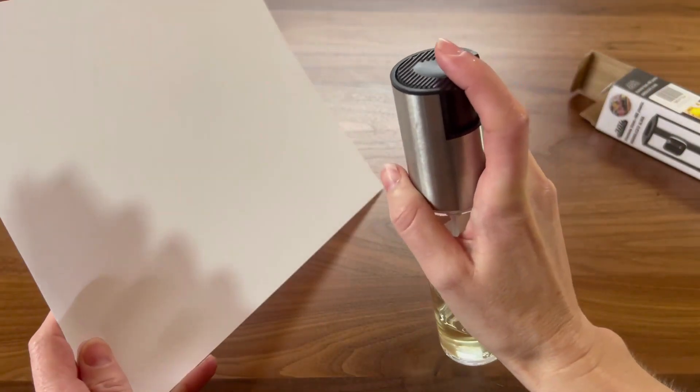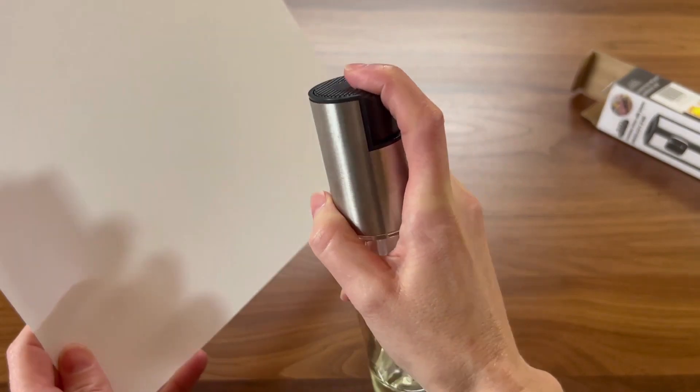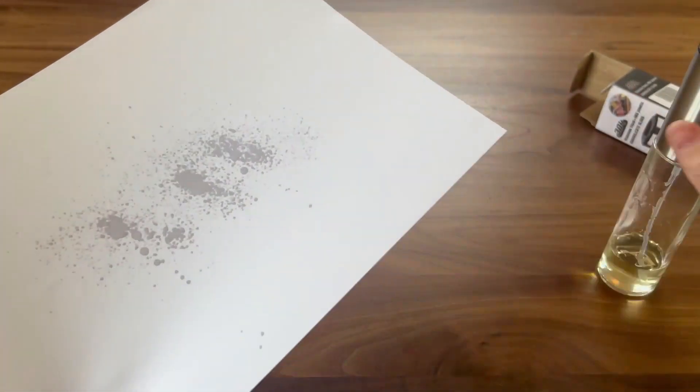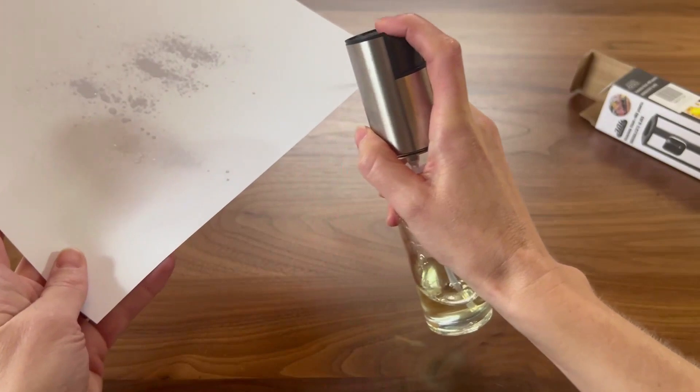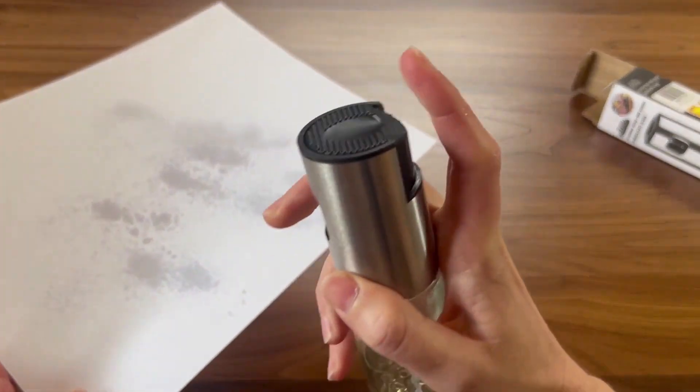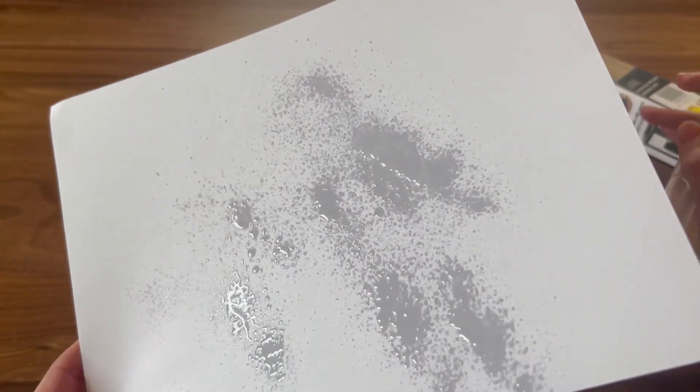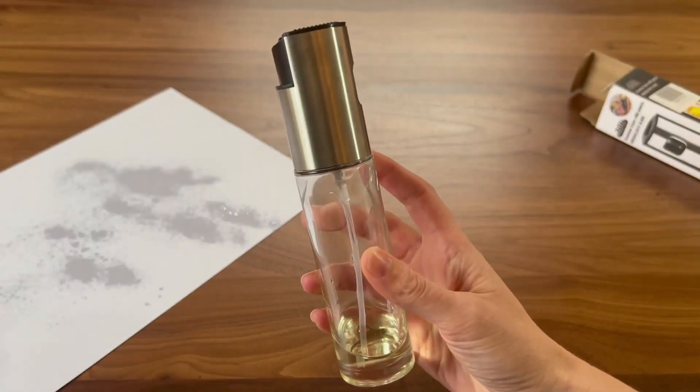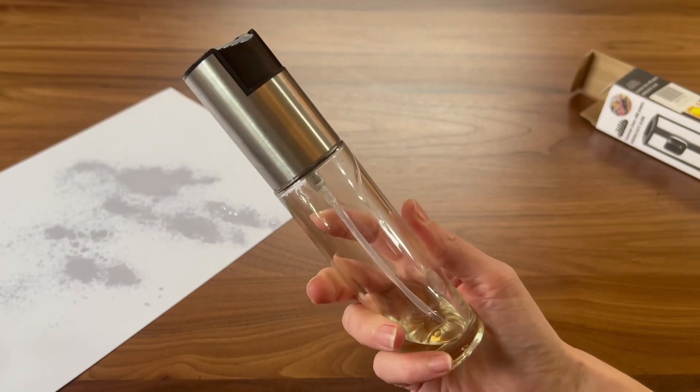I'm gonna spray it on a piece of paper, for example. And there it goes—it sprays really well, very simple. Easy to press, easy to spray. That is gonna work really well. And there you go, an excellent oil sprayer for your kitchen.